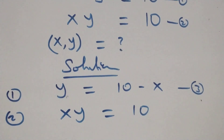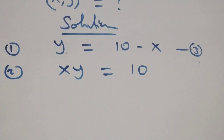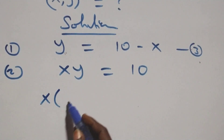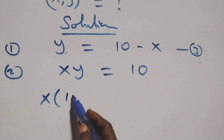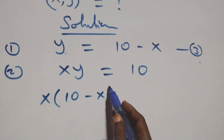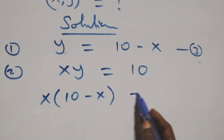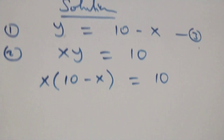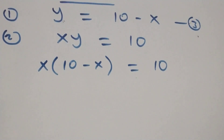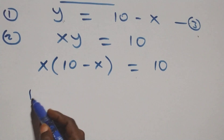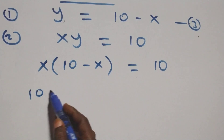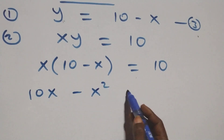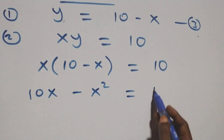We substitute equation three into equation two. This becomes x times (ten minus x) equals to ten. Opening the bracket, this becomes ten x minus x squared equals to ten.